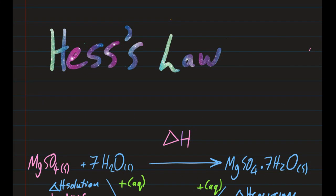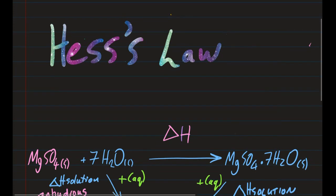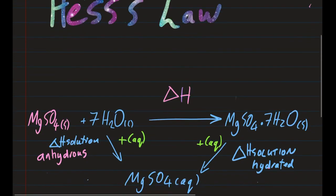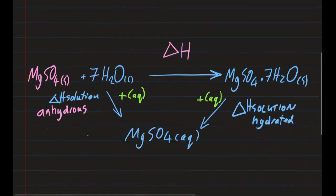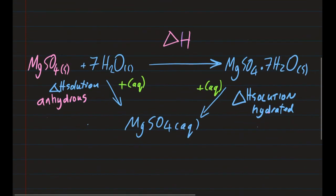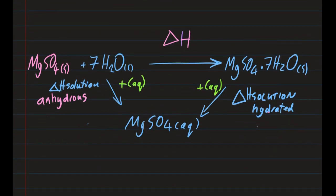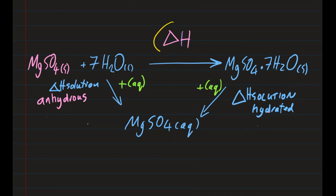Hess's Law states that the enthalpy change of a reaction is independent of the pathway taken to get there. There are three reactions involved here — this one is impossible to do directly, but you can do the other two.